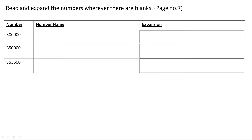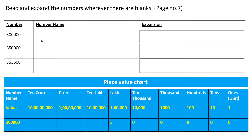Again on page number 7, there is a question: read and expand the numbers wherever there are blanks. The first number is 3,00,000. Placing it in the chart, 3 is on the lakh place with 5 zeros after it. The number name is three lakh. The expansion is 3 × 1,00,000.